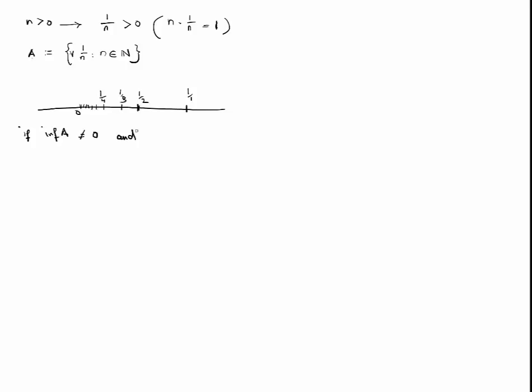So, infimum of A is not equal to 0, and it cannot be less than 0. This leaves us with just one possibility, which is that the infimum of A is greater than 0. So, let's call the infimum of A C, and let's assume that C is greater than 0.